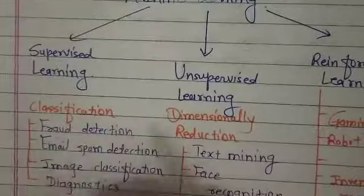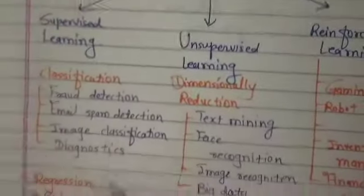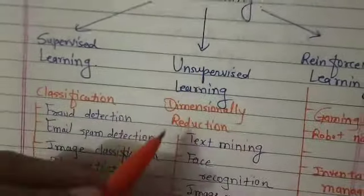Supervised learning has mainly two algorithms: classification algorithms and regression. Unsupervised learning also has two.